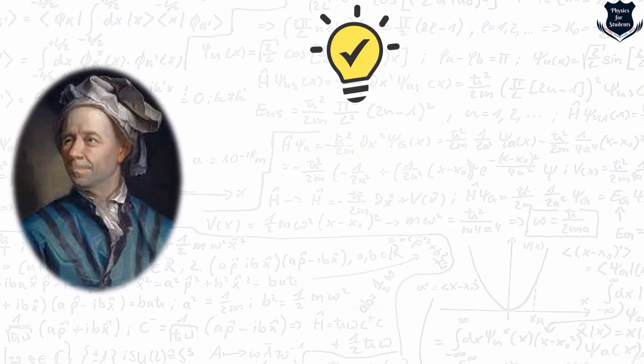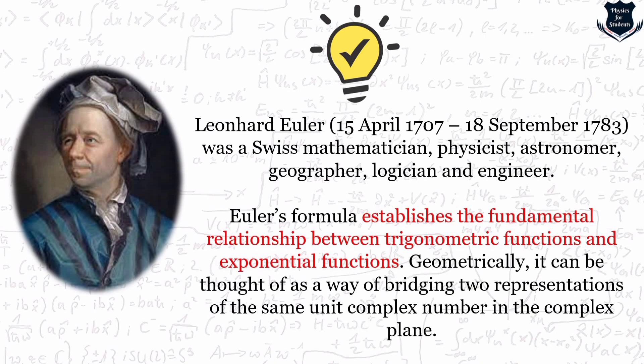Leonard Euler was a great mathematician, physicist, and astronomer who established the fundamental relation between trigonometric functions and exponentials — the formula we just used. He introduced much of modern mathematical terminology including the notion of a mathematical function, and is also known for his works in mechanics, fluid dynamics, and even music theory. When Euler went blind and was asked how he felt about seeing through only one eye, he replied: 'Now I will have less distraction.'